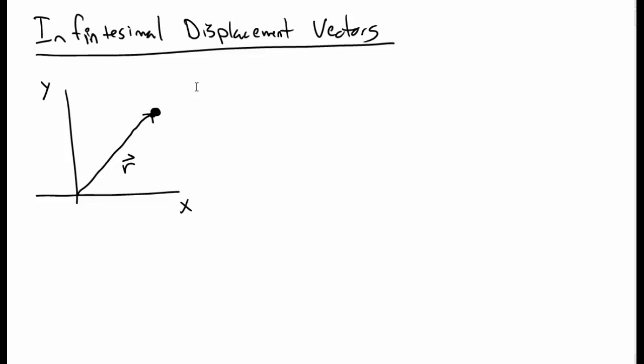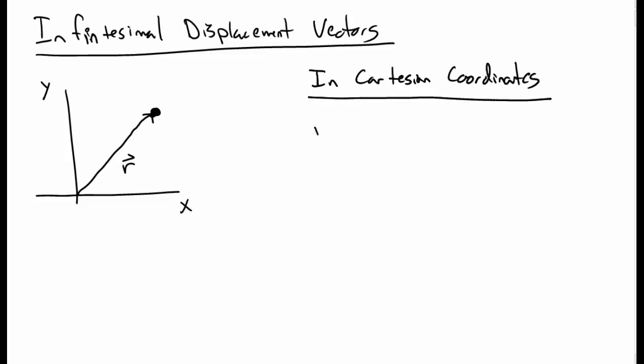A really important idea in understanding curved coordinates and their application to physics is the idea of infinitesimal displacement vectors. So let's consider a point at some vector r in the xy plane — let's just consider 2D coordinates for now.